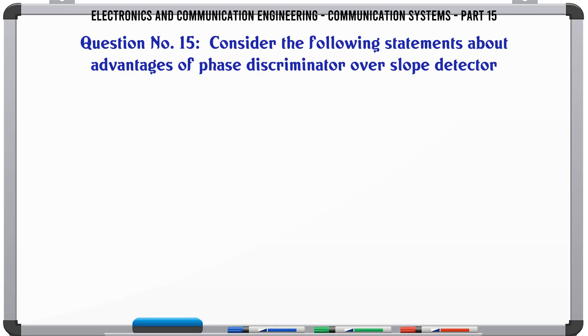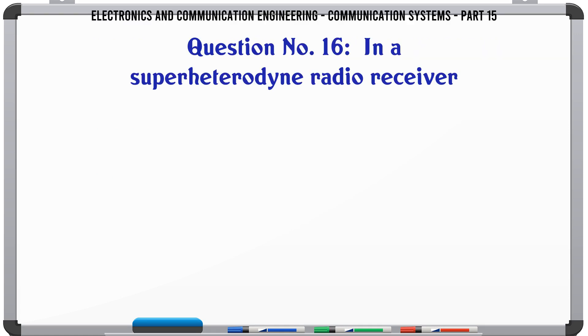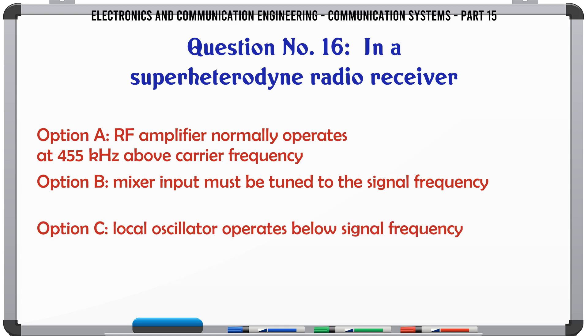Consider the following statements about advantages of phase discriminator over slope detector: a 1 2 3 4, b 2 3 4, c 1 2 3, d 1 3 4. The correct answer is 1 3 4.